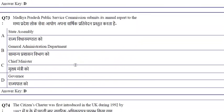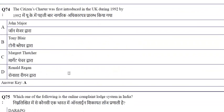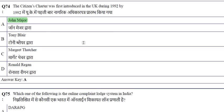The MP Public Service Commission submits its annual report to the Governor. The Citizens' Charter was first introduced in the UK during 1992 by John Major.